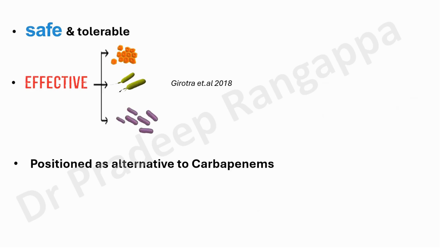I would be skeptical using it against Acinetobacter. It is shown to be effective against Pseudomonas and Enterobacter species and is positioned as an alternative to carbapenem. There is only one company producing this. It can be used as a de-escalation drug and as a carbapenem sparer, especially in ESBLs. The mechanism of action includes reducing efflux pump expression, inhibiting plasmid transfer, down-regulating beta-lactamases, and increasing porosity.